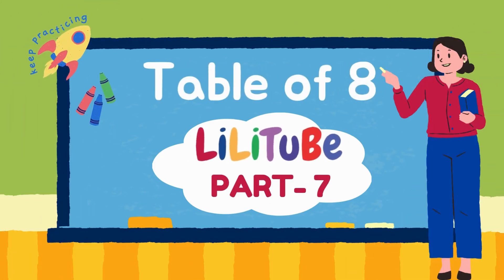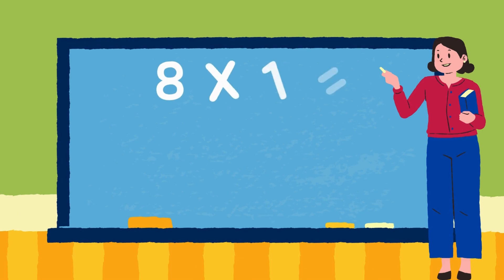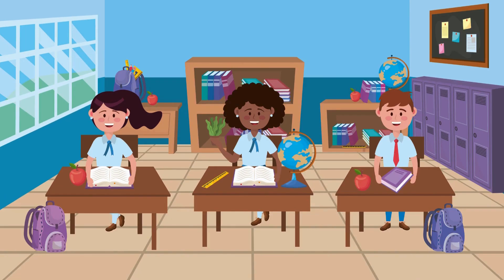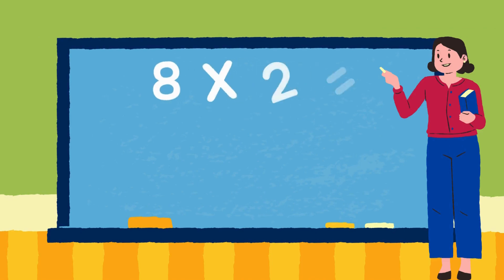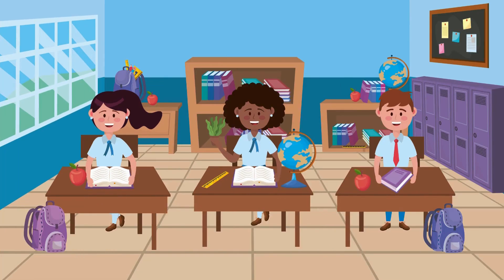Let's learn the table of 8. 8 ones are 8. 8 twos are 16.